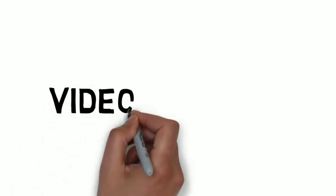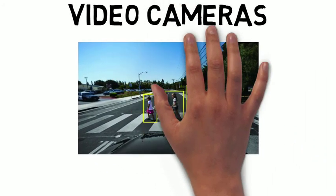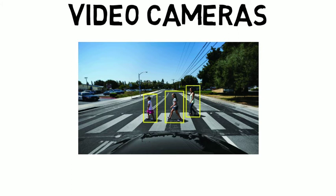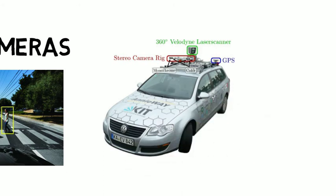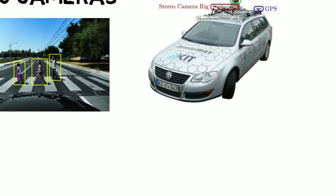Then, the video cameras. The video cameras are used to detect traffic lights, read road signs, keep track of the position of other vehicles and look out for pedestrians and obstacles on the road. Additional stereo cameras are used to capture 2D pictures to detect objects.